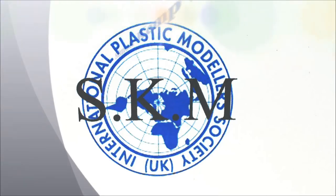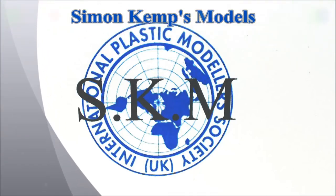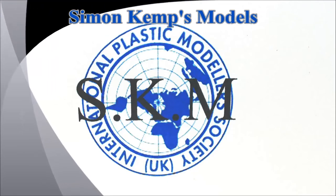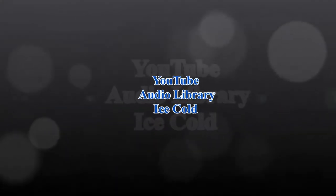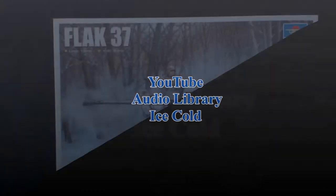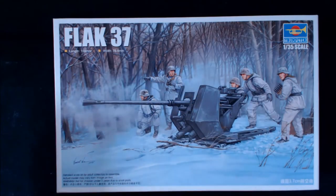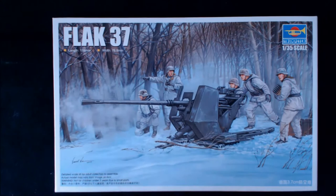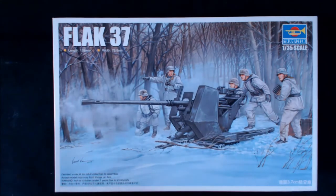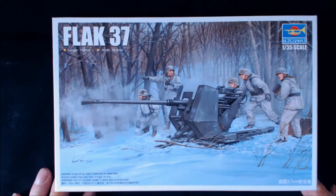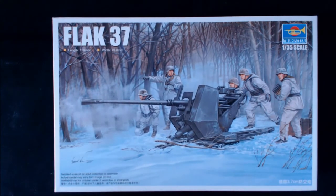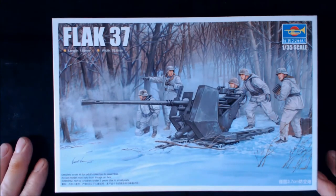Shall we begin? Let's begin now. Welcome everybody, we're going to take a look at the Flak 37 by Trumpeter. Now this is one of the defense weapons that I will be putting onto the train that I'm building in the Rail Link group build.